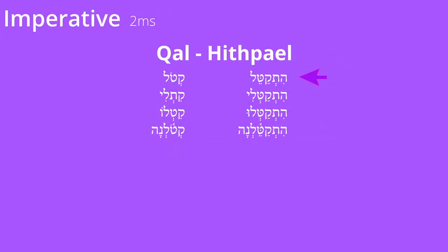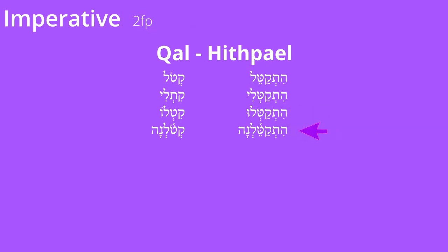Now look at the imperative. The imperative follows suit with the second masculine singular imperfect, except in place of the tav imperfect prefix we get the hey prefix, which matches everything else we've seen prior. And don't forget the dagesh forte in the second root consonant — consistent, just like Piel. Compare Qal with Hithpael: Katol / Hithkatel; Kitli / Hithkatli; Kitlu / Hithkatlu; Katolna / Hithkatelna.